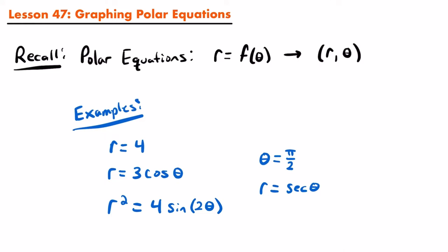You can have an equation where you just have r equal to some constant, or theta equal to some angle. Or you could have more complicated polar equations, such as r equals 3 times cosine theta, r equals secant theta, or even r squared equals 4 times sine of 2 theta. Each of these different polar equations are going to have different graphs, and that's going to be the focus of this video — how to identify what type of graph results from different types of polar equations and how to sketch them.